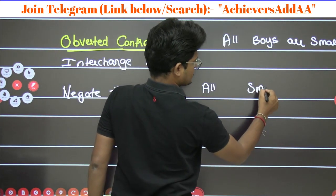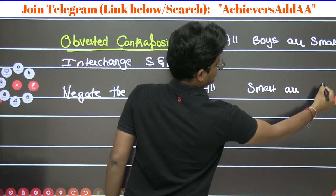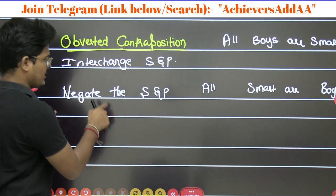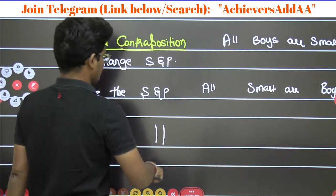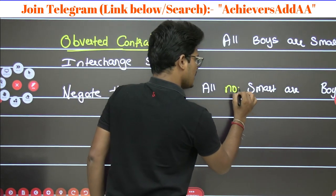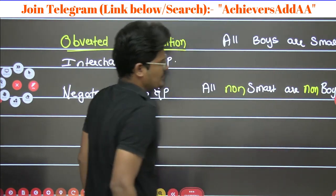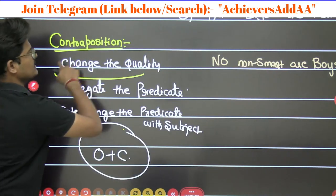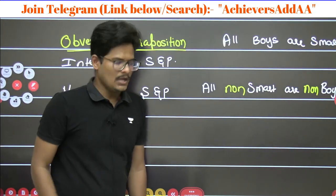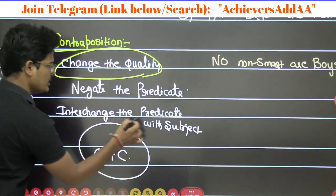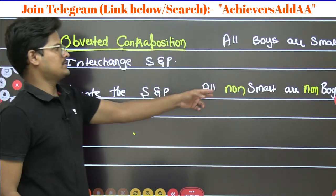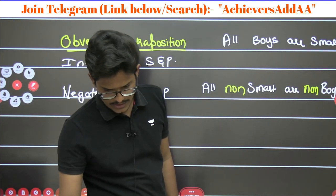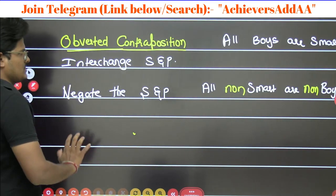After interchanging, predicate becomes subject and subject becomes predicate. Now I should negate — write both the subject and predicate in negative form. That gives: All non-smart are non-boys. The key difference: in contraposition only the predicate is negated, but in averted contraposition both the subject and the predicate need to be negated. There is no changing of quality in averted contraposition.